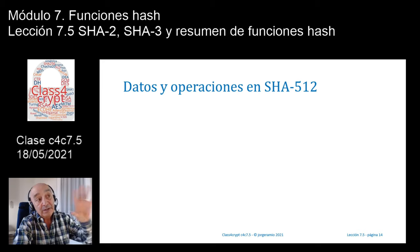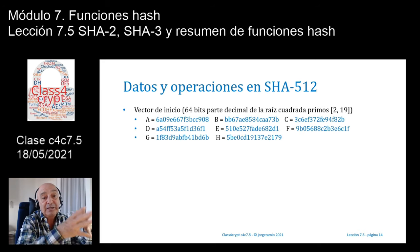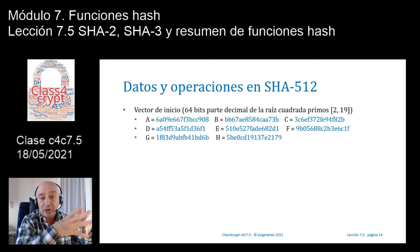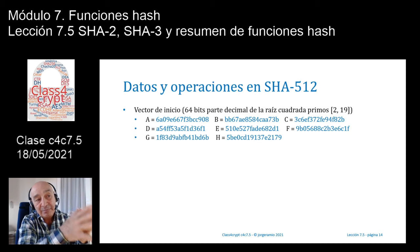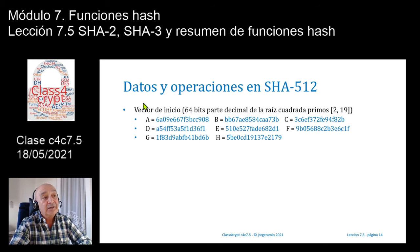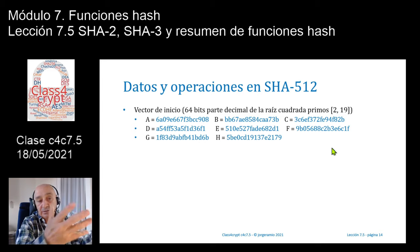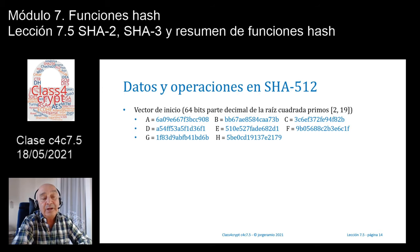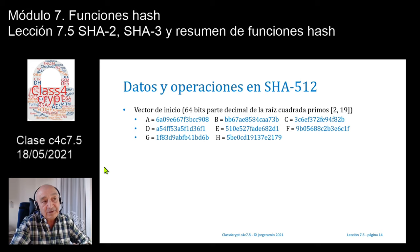Para SHA512 básicamente es lo mismo, pero trabajando con palabras de 64 bits. El vector inicial son 8 palabras de 64 bits, obtenidas de la parte decimal de la raíz cuadrada de los primeros 8 primos. Para las constantes KT se necesitan 80 constantes de 64 bits, obtenidas de los primeros 80 primos —del 2 hasta el 409—. Estos son valores públicos que se pueden consultar directamente en el RFC sin necesidad de recalcularlos.